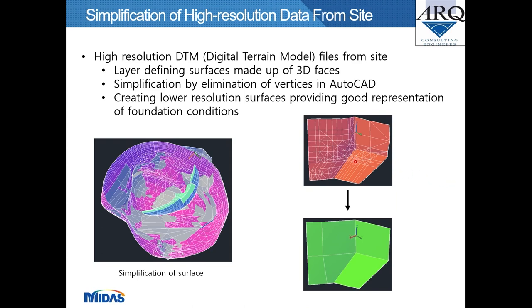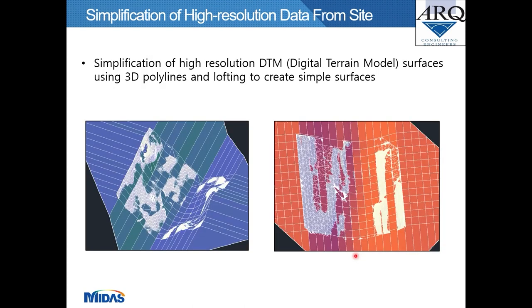Another example of simplification: a red vertical surface made up of numerous 3D faces and vertices was simplified into a green surface, showing good representation of the geometrical configuration but with a large reduction in data size.